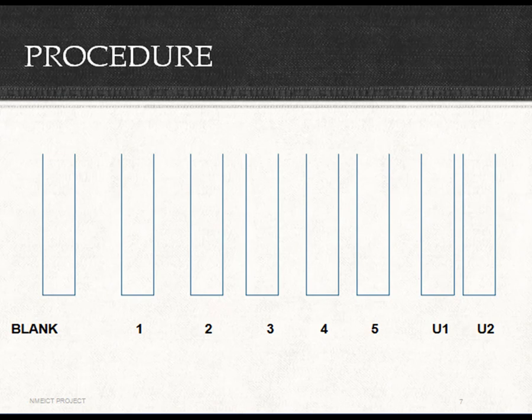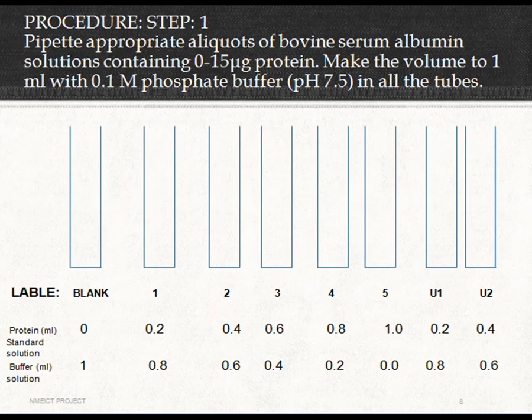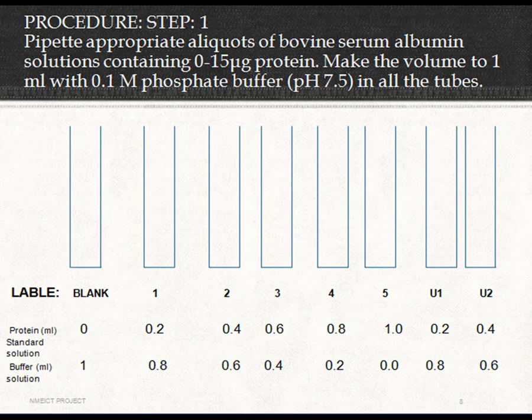After properly marking the tubes, add the protein standard solution to each tube. For the blank, no protein solution is added. In test tubes 1, 2, 3, 4, and 5, add 0.2 ml, 0.4 ml, 0.6 ml, 0.8 ml, and 1.0 ml of standard protein solution respectively, then make up the volume with buffer. For unknown 1 and unknown 2, take any aliquot of your choice — for example, 0.2 ml and 0.4 ml — and make up the volume to 1 ml with phosphate buffer.